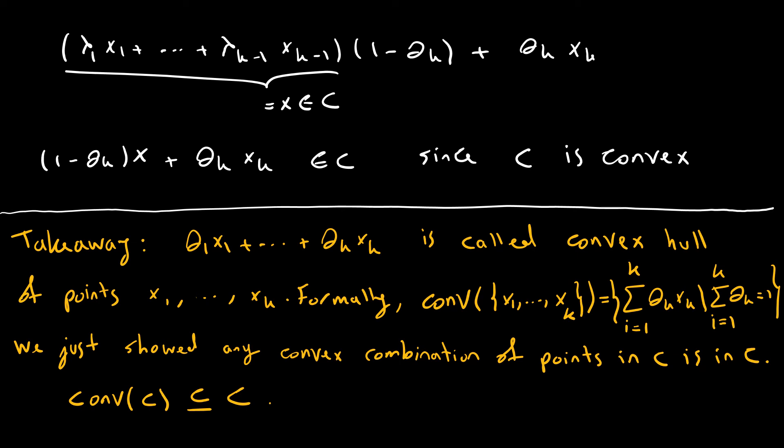Now we have this convex combination, which I am going to denote that as x. And we know x is in C, because of induction hypothesis. Since all the coefficients are non-negative, and the sum of the coefficient λ_i is 1, so this is a point in C, and we know x_k is also in C. So we have this new convex combination saying x is in C and x_k is in C, and 1 minus θ_k plus θ_k is 1. Therefore, we have the convex combination of two points, and we know C is a convex set. Therefore, this new convex combination is an element of C. And that concludes the proof.